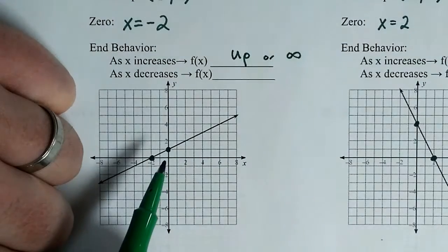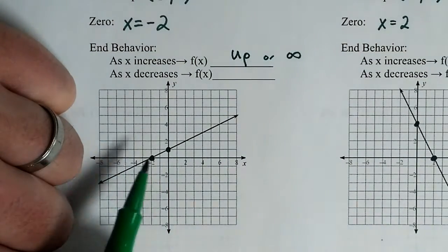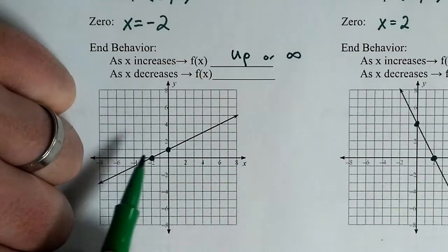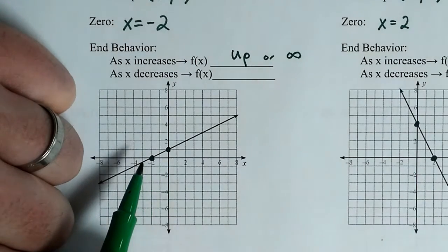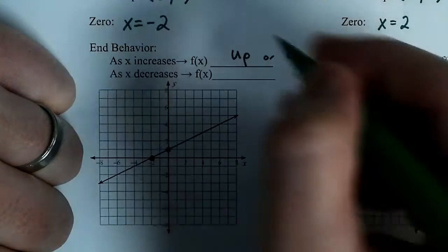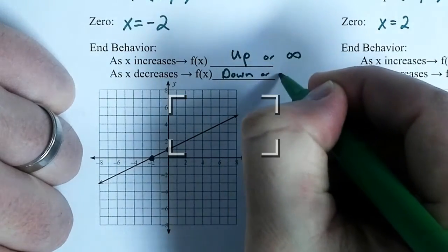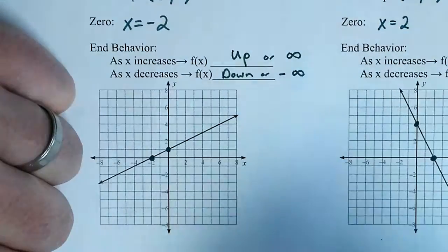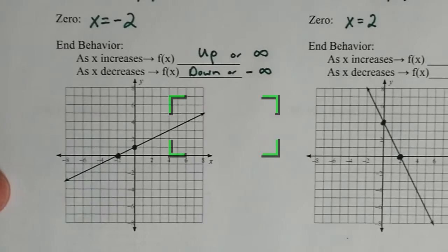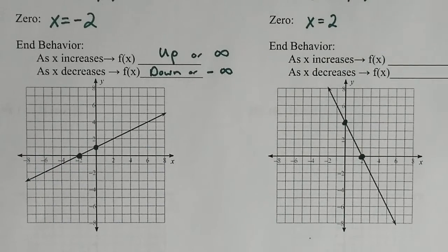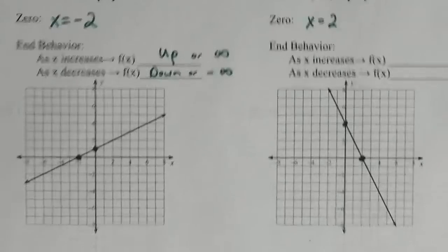As x decreases. So, that's on the left side. Because again, x is going down over here, right? Negative 1, negative 2, 3, 4, 5. All those are negative. What's the graph doing on the left side? It's going down. Right. Or negative infinity. Good work. So, you got up is positive infinity. Down is negative infinity.